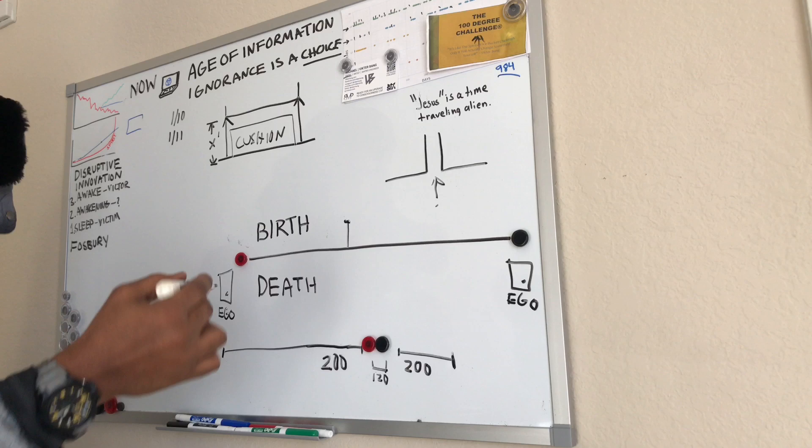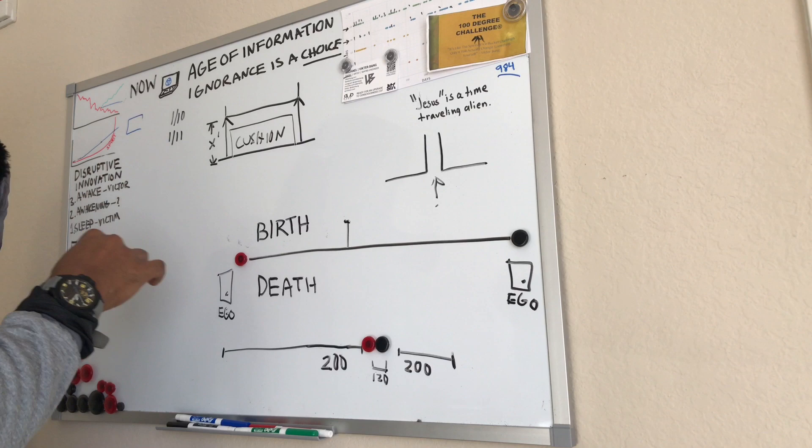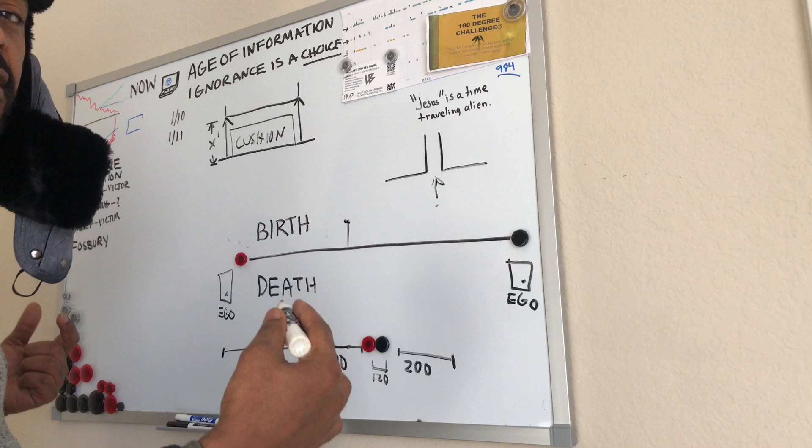So there was this guy named Fosbury who perfected jumping backwards. The Fosbury flop is what they called it. And he was an unknown guy that won the Olympics, he won the gold medal. And then after that, everybody since has been doing the Fosbury flop. It just makes the most sense.